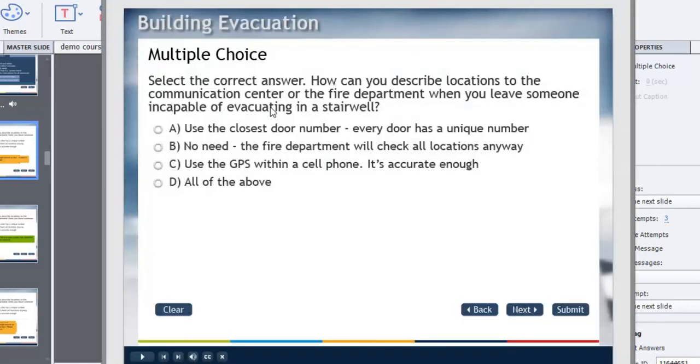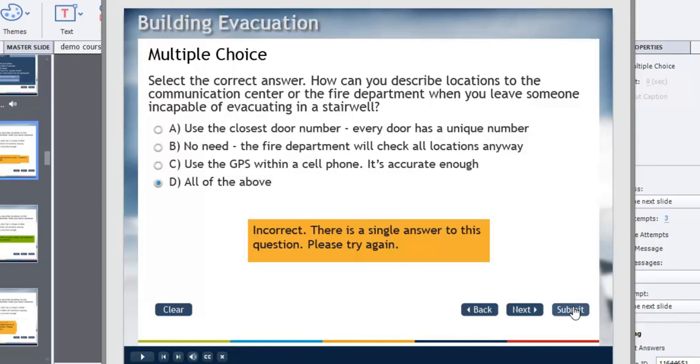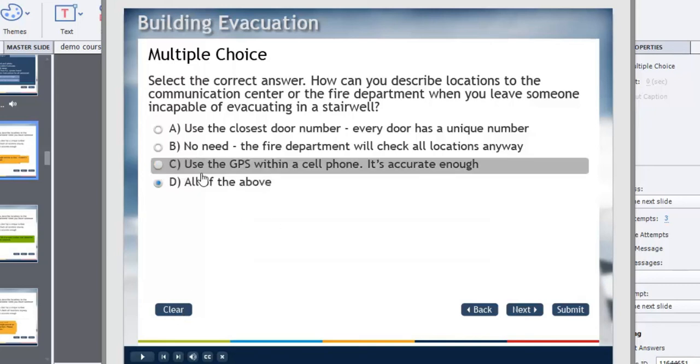So here's our question. Let's choose, well, it's obviously all of the above, right? Because that's always the right answer when all of the above is available. So let's choose that and hit submit. Oh, okay. Incorrect: there is a single answer to this question. Please try again. Of course I can hit clear here to get rid of that message.